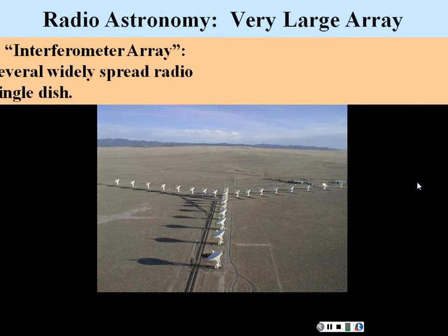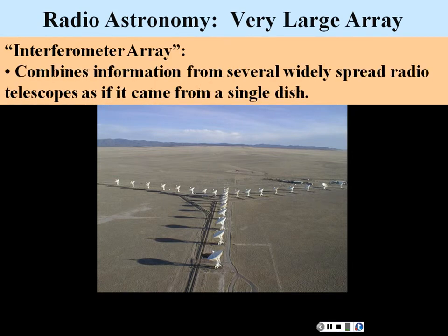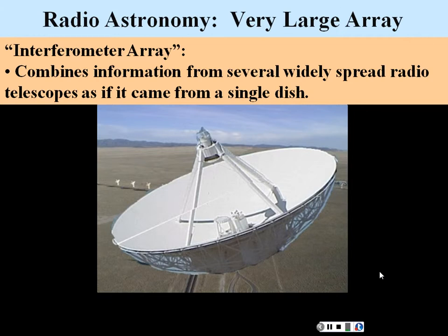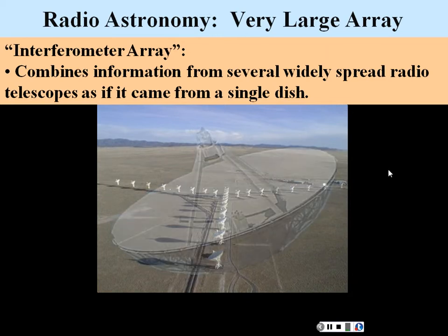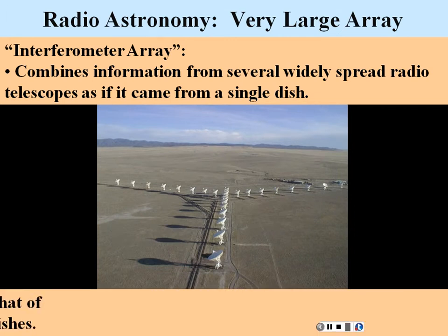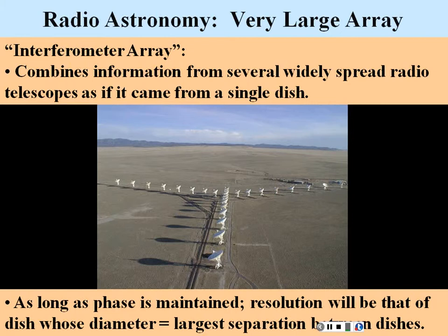Here's the Very Large Array, an interferometer array that combines many radio telescopes into basically one big telescope. If you use interferometry — matching the phase of all these telescopes so they seem to be collecting at the same time — you effectively create a large virtual disk. Your resolution is equivalent to a disk whose diameter equals the largest separation between all the smaller telescopes.